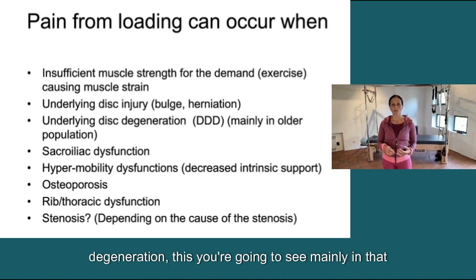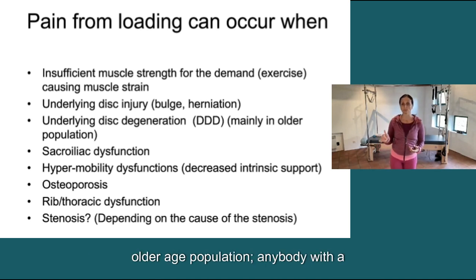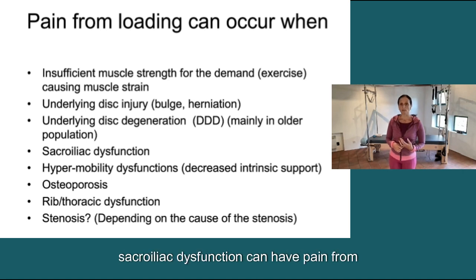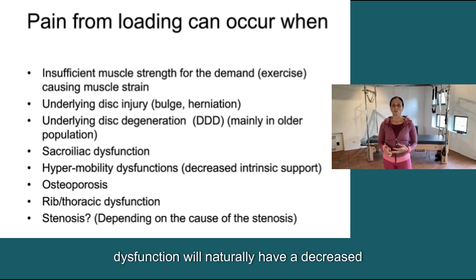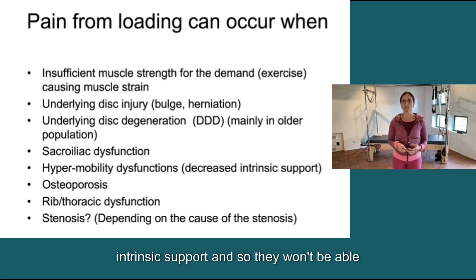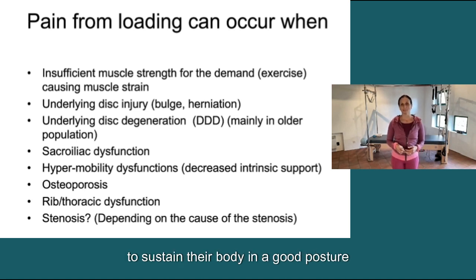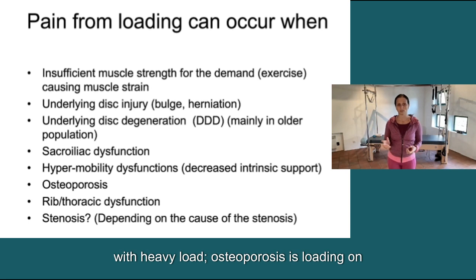Underlying disc degeneration — this you're going to see mainly in that older age population. Anybody with a sacroiliac dysfunction can have pain from loading the SI joint. Somebody with hypermobility dysfunction will naturally have a decreased intrinsic support, and so they won't be able to sustain their body in a good posture with heavy load.